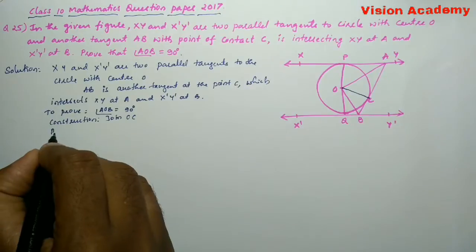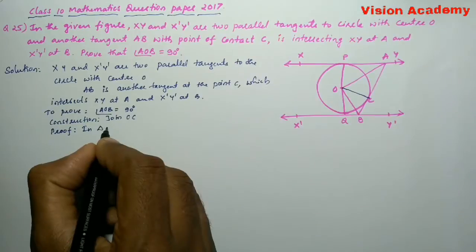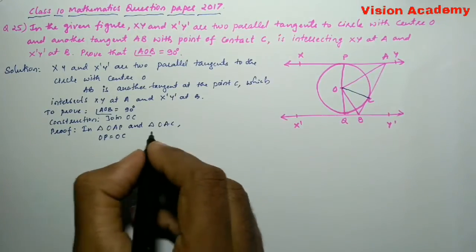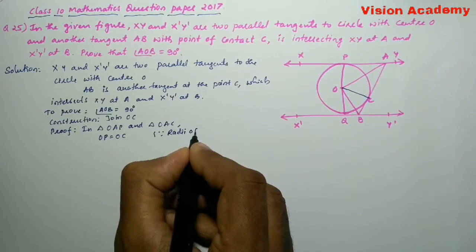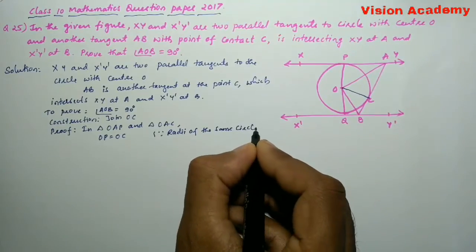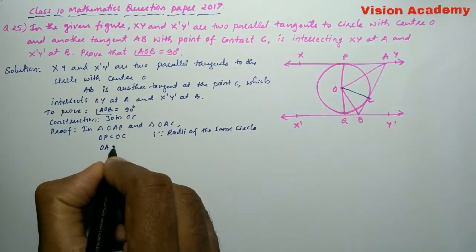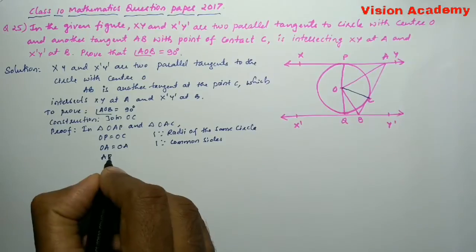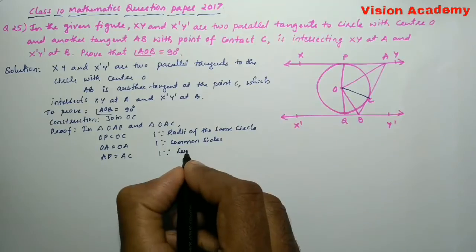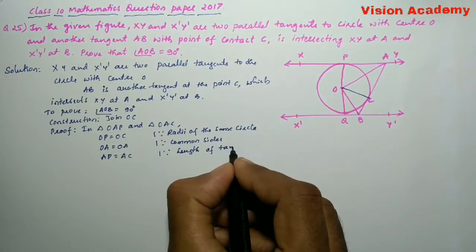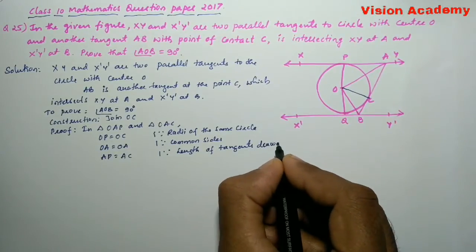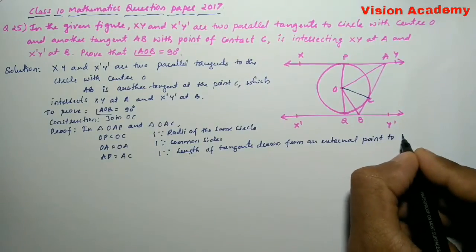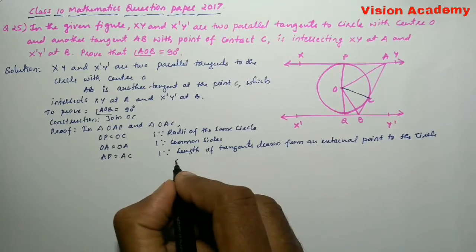Now, we will move on to the proof. In triangle OAP and triangle OAC, OP is equal to OC because radii of the same circle. OA is equal to OA because of common sides.